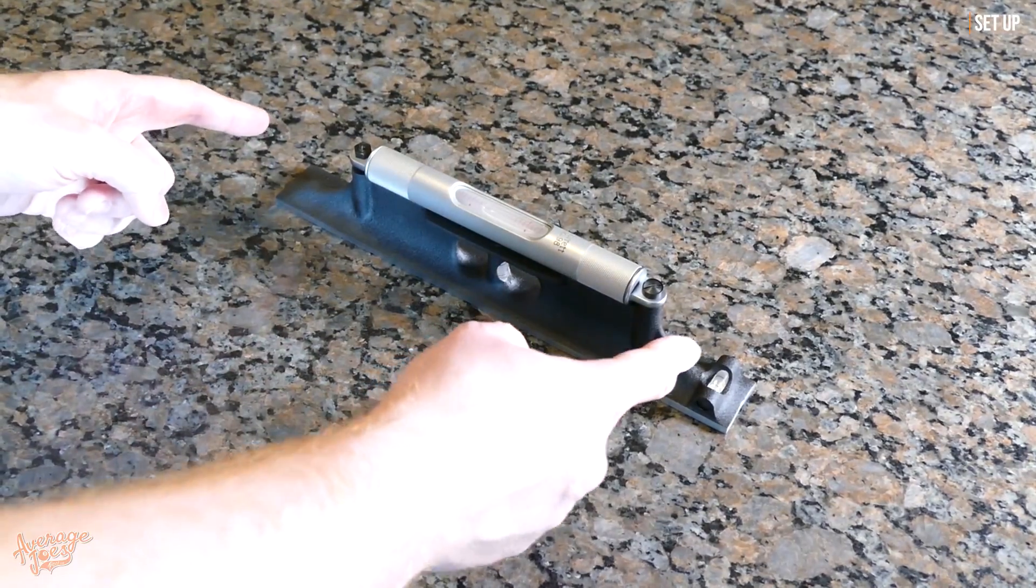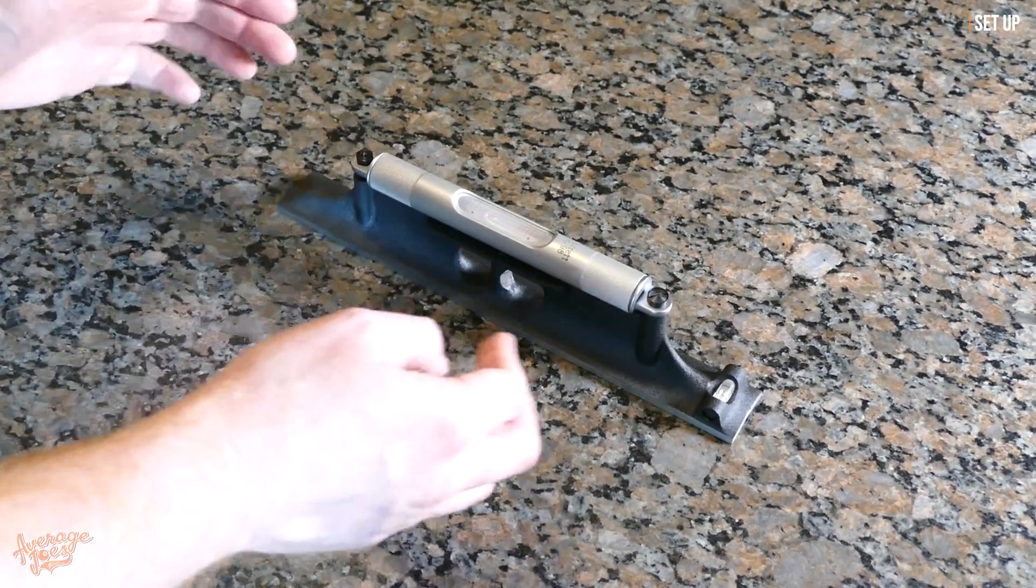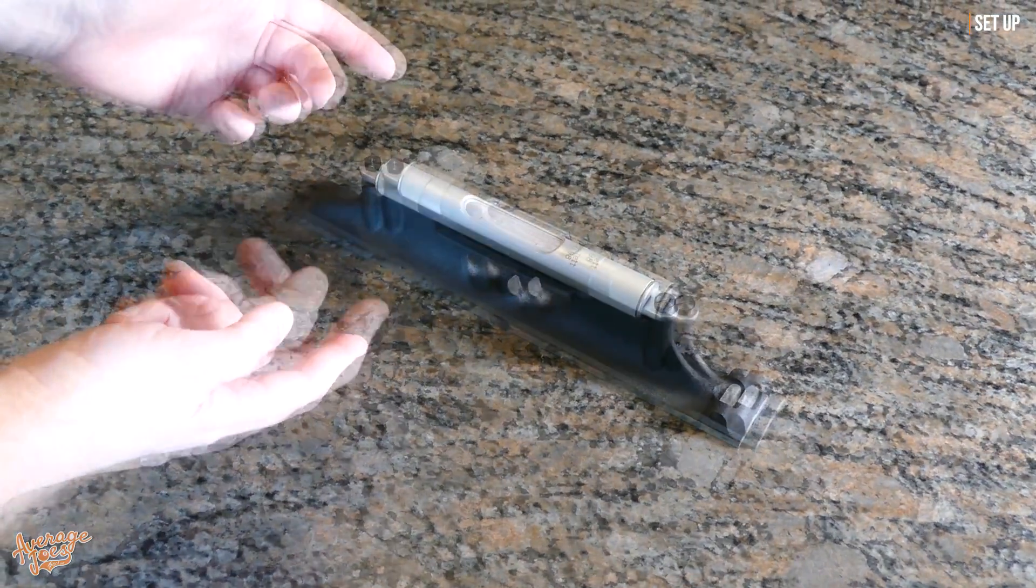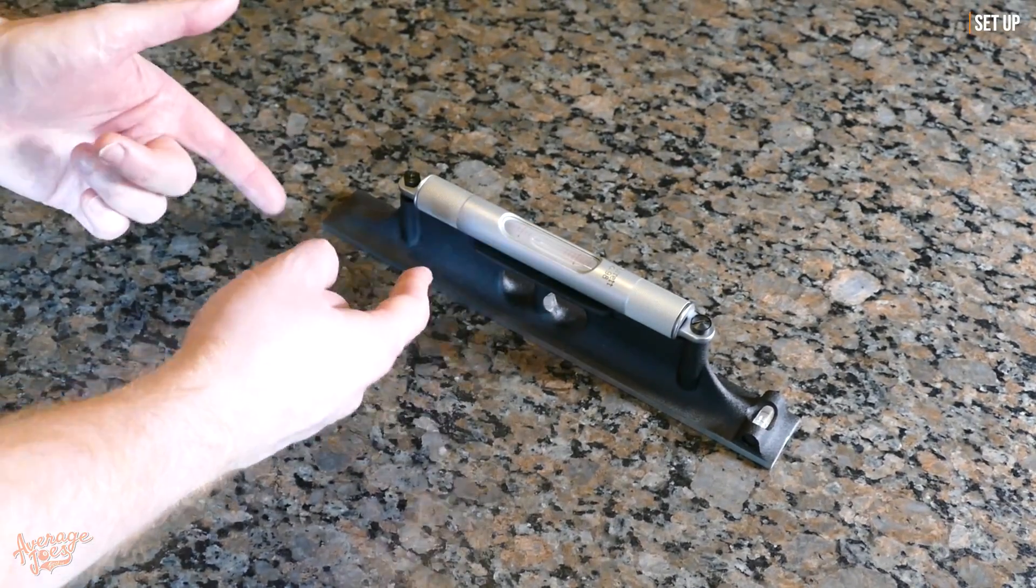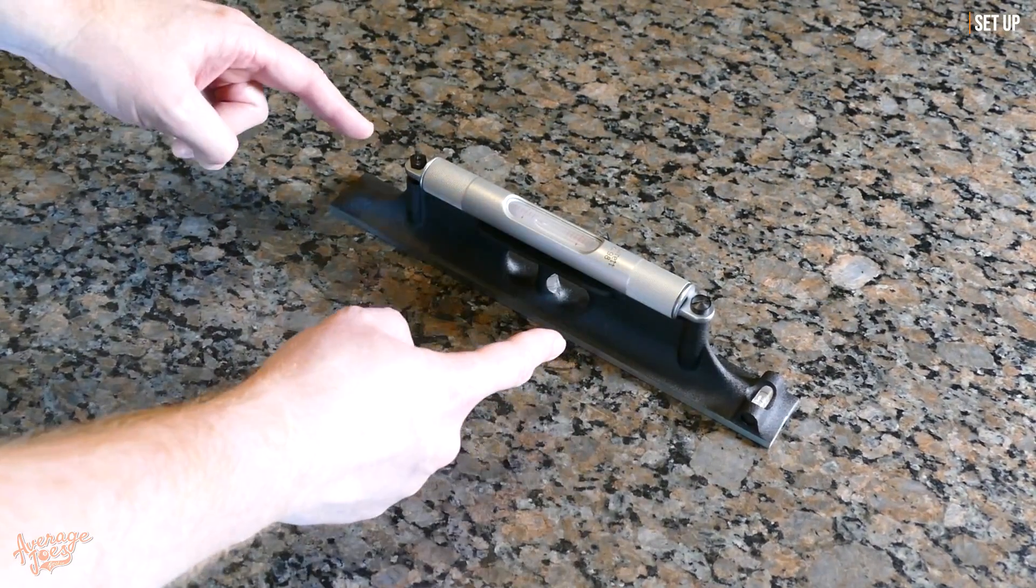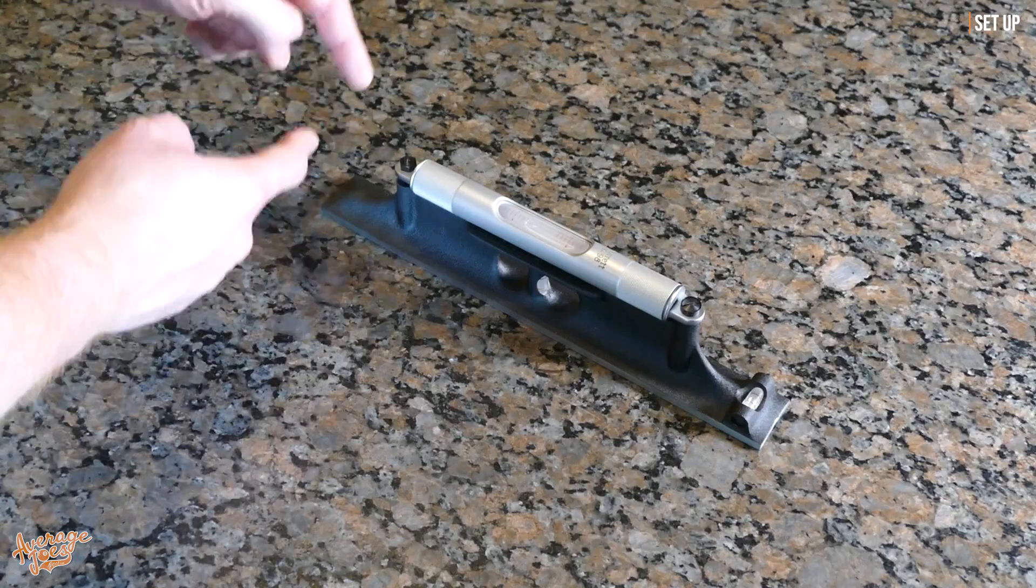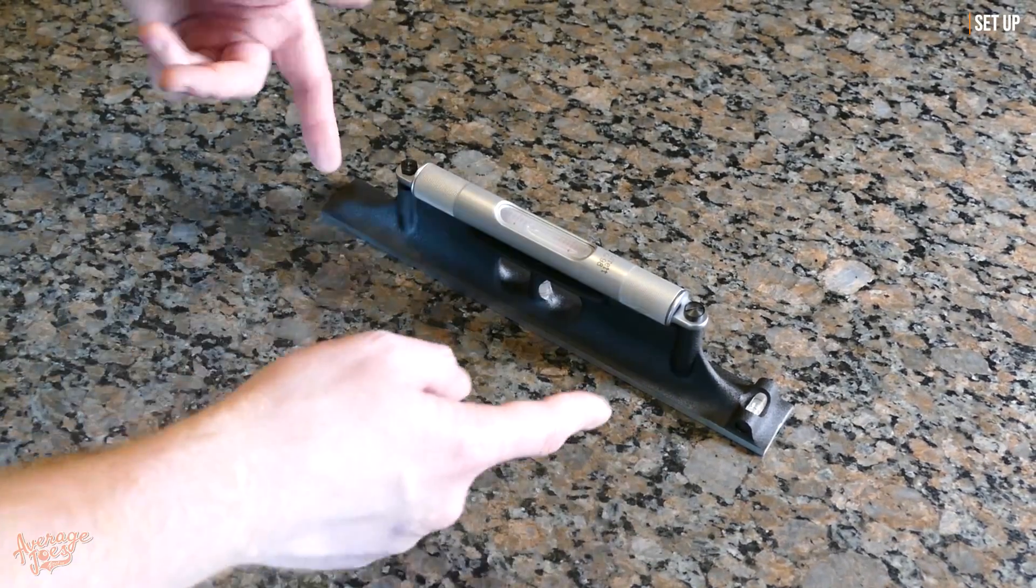Now to calibrate this level, what we're going to do is spin it end on end. We're going to turn it around 180 degrees and we need to get it so that the reading is identical in both directions. However, to allow us to do that, it's important that we get the level placed in exactly the same spot when we spin it around.